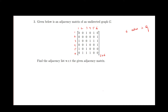From this adjacency matrix, we can see which vertices are adjacent to each other. If you see here, vertex 1 is adjacent to vertex 3 and vertex 5. Let's try to draw the graph first — this is vertex 1, and it is adjacent to vertex 3 and vertex 5.